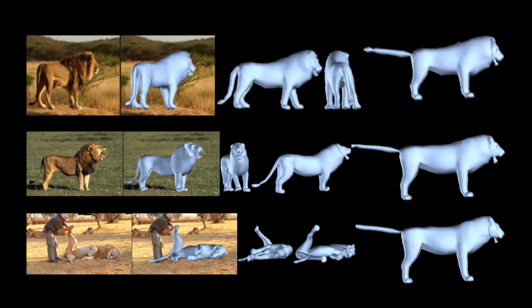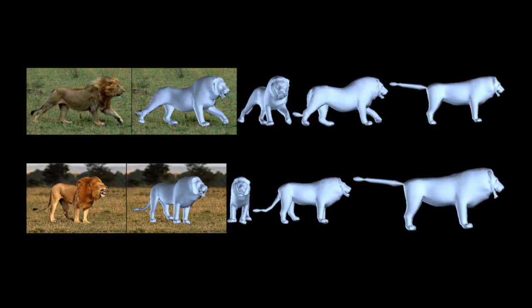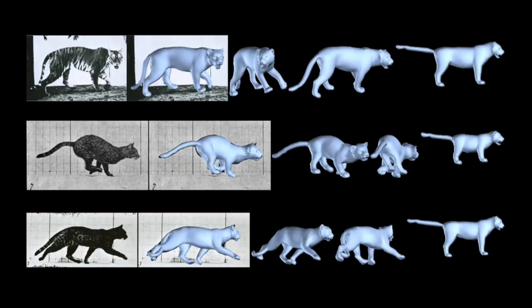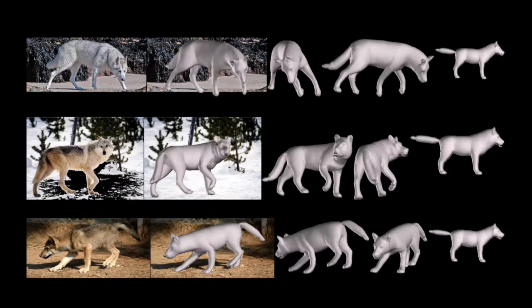In the experiments, we estimate the shape and pose of animals. In these examples, the SMAL model has been fit to images. For this, silhouettes and joint locations have been manually annotated.